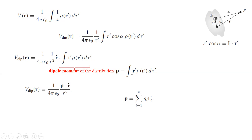For a discrete set of charges, the integral is replaced by a sum: p = Σ qᵢ rᵢ'. That's the discrete version of the dipole moment. I hope you've enjoyed learning about the multipole expansion. The key idea is that it allows us to understand the effect of a charge distribution at long distances using just a couple of coefficients, which we now know how to calculate. Thank you very much — see you in class.